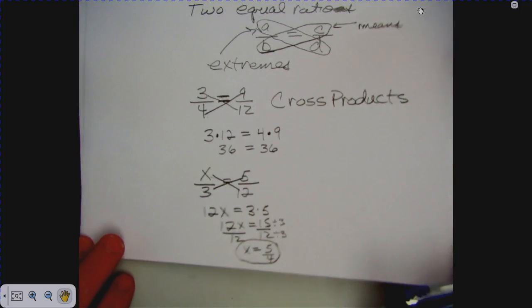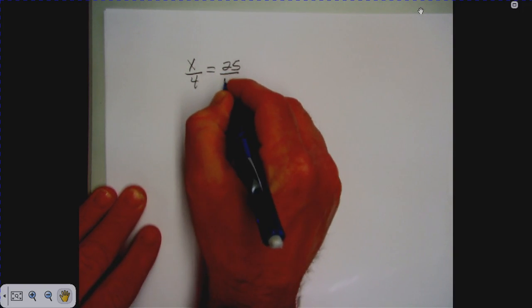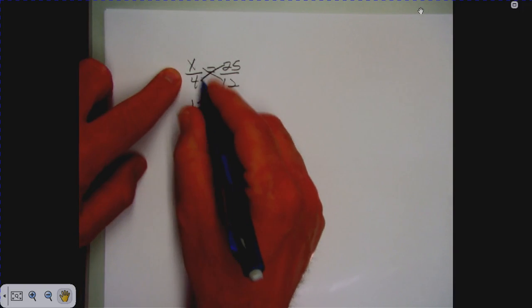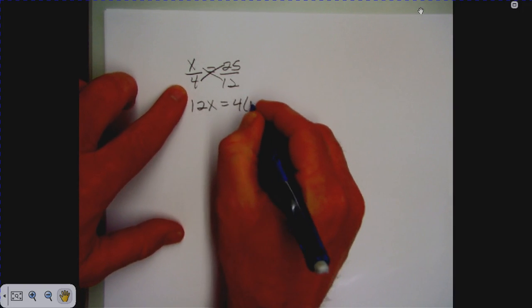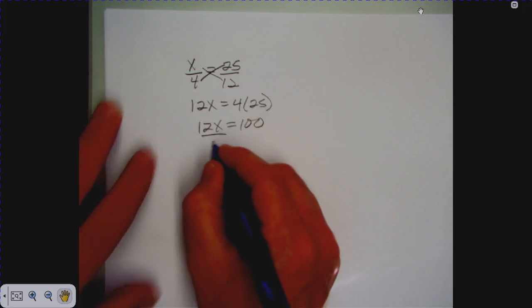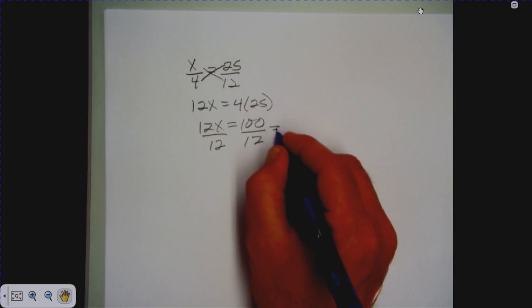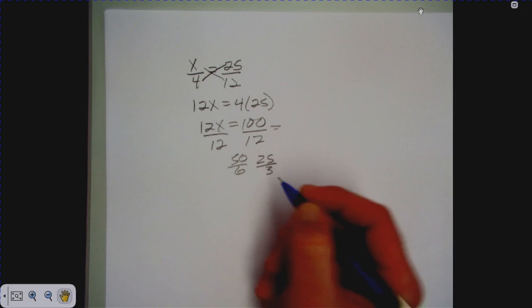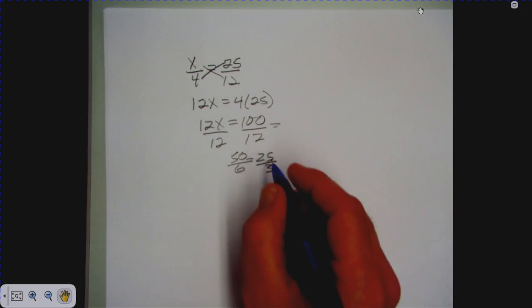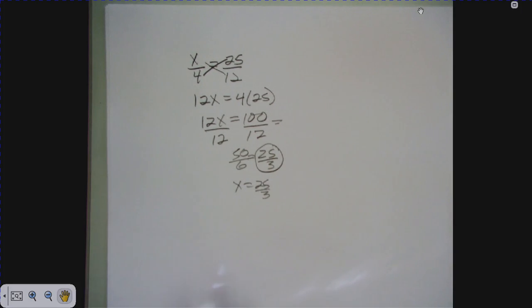Here's another example: solve x over 4 equals 25 over 12. Using cross products: 12 times x equals 4 times 25, so 12x equals 100. Dividing each side by 12 gives 100/12, which reduces to 25/3. So x equals twenty-five thirds.